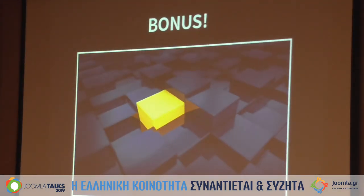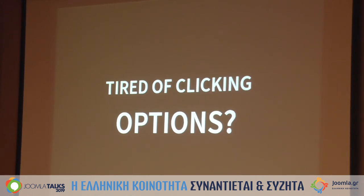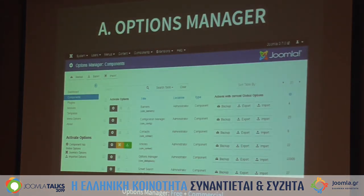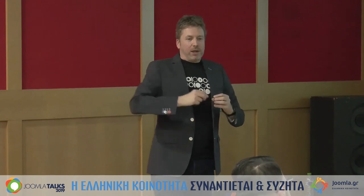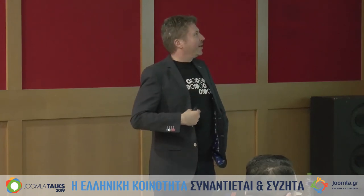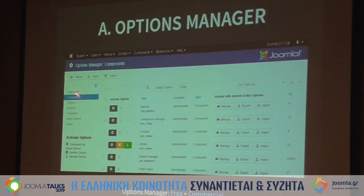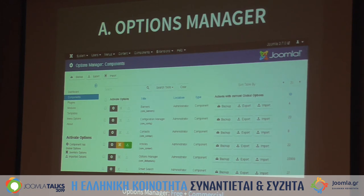A couple of bonus things. If you are tired of clicking options — I am — I created my own extension called Options Manager. Instead of installing Joomla and manually going through Articles Options to hide category, author, navigation, and icons, I have a free version that lets you export component options so you don't have to reconfigure them on each site, and a commercial version where you can import a whole configuration file. For example, my JCE editor license code is included in the configuration file, so when I import it the license is already there.